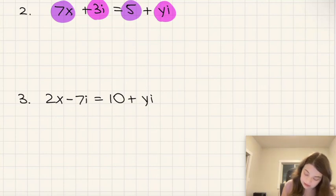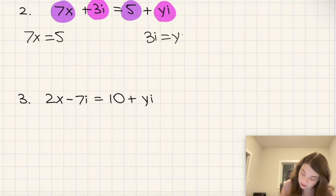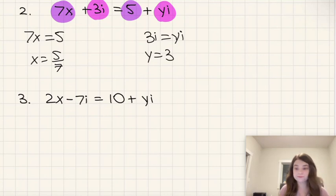So therefore we know that 7x must be equal to 5, and also that 3i is yi. That means x must be 5 over 7, and that y must be equal to 3.